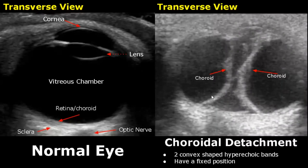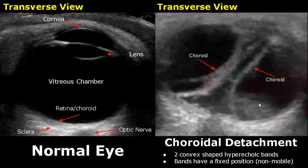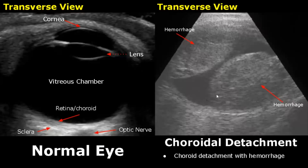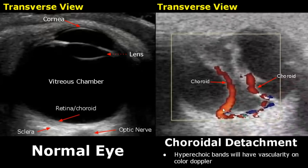A choroidal detachment has its own specific features on ultrasound. There will be two convex-shaped hyperechoic bands which will not move around and have a fixed position. Here is another case of choroidal detachment — two hyperechoic bands in a fixed position. Sometimes a choroidal detachment is associated with hemorrhage; in this case mixed echoes are seen within both convex-shaped structures. On color Doppler both hyperechoic bands will have blood flow because choroid is a vascular membrane.